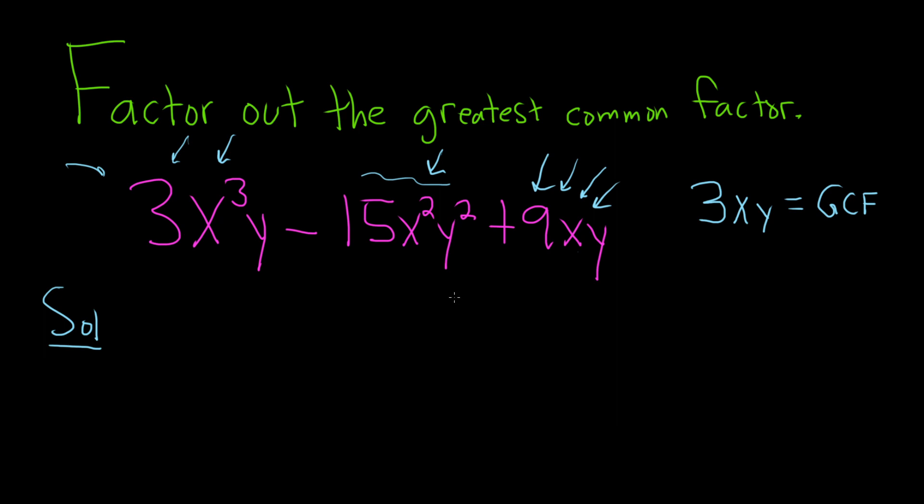So now we have to factor it out. So we'll just write it down, 3xy. And then you put a parenthesis. And then you just have to fill in what's missing. You ask yourself, what do you multiply by 3xy in order to get 3x cubed y? So you're missing, looks like an x squared. Because when you multiply 3xy by x squared, you're going to add the exponents. You'll add the 1 and the 2, and that will give you the 3. So that's why that's missing. Because when you multiply, there's really a 1 here, and you do 1 plus 2, and that gives you 3. So that's how you get that 3.